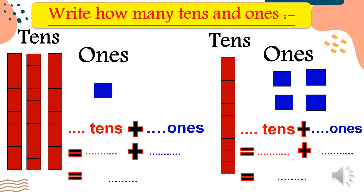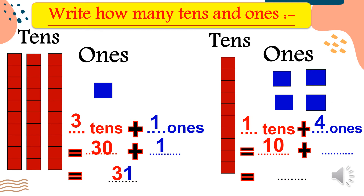Write how many tens and ones. Here in tens, count how many sticks: one, two, three — we put three in tens. In ones, I have one small square, so I put one. Three in tens equals thirty, one in ones equals one, so thirty plus one equals thirty-one. Next: one stick in tens — put one. In ones: one, two, three, four — four in ones. One ten equals ten, four in ones equals four — ten plus four equals fourteen.